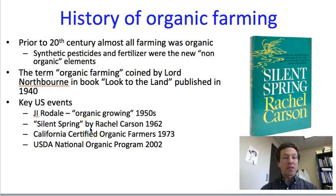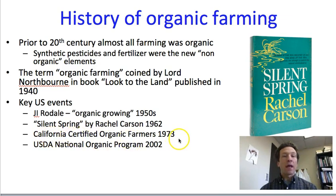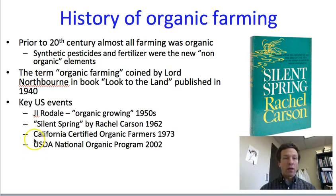In the 1970s, we had the start of more formalized organic farming regulations. This was with the California Certified Organic Farmers, so they could apply a label saying that members of this group were using organic techniques. We then had a couple of decades where organic farming was around, and you could find products labeled as organic. There were also various different certifications offered, but there wasn't any single uniform certification throughout the country.